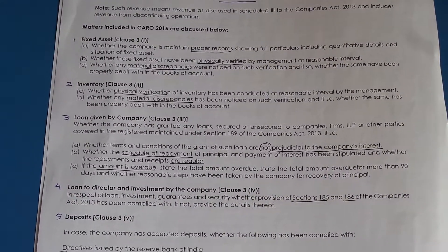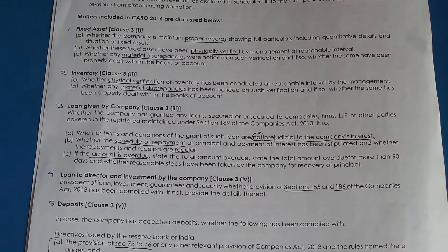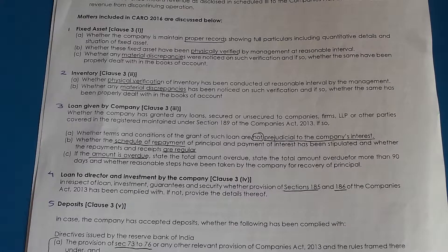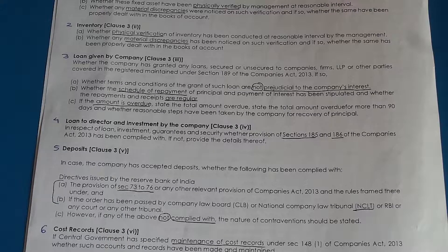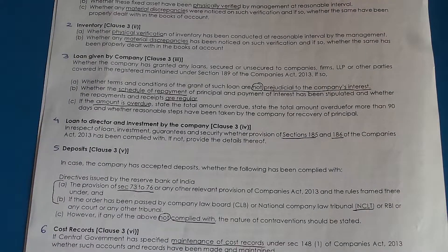Clause 4 covers loans given to directors and investments by the company. The company must comply with section 185 of the Companies Act, which deals with loans to directors, and section 186 for investments. Clause 5 deals with deposits received by the company — not deposits given. If the company receives deposits, it needs to comply with sections 73 to 76 of the Companies Act, and also comply with any NCLT or RBI orders. If not complied with, that should be stated.